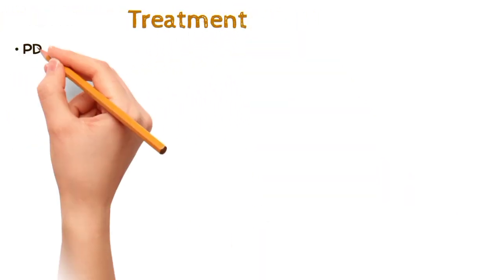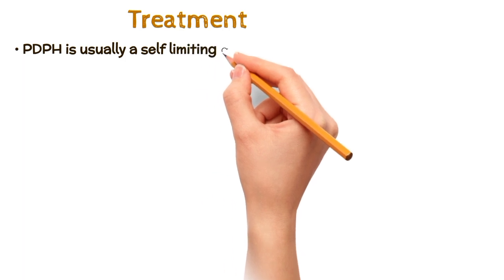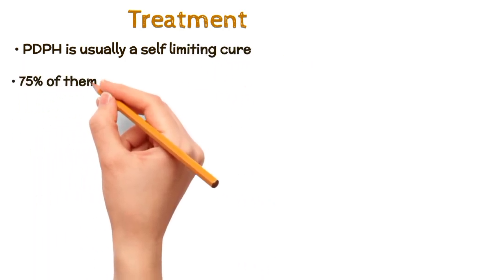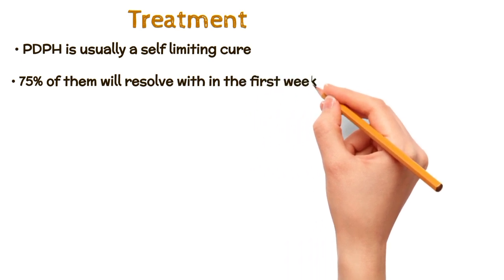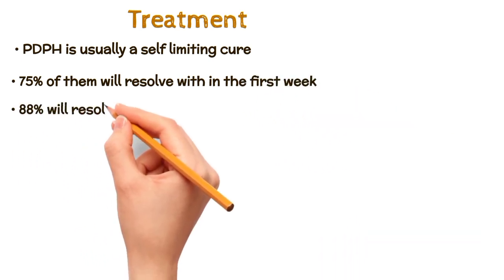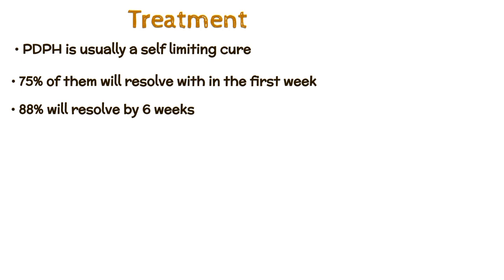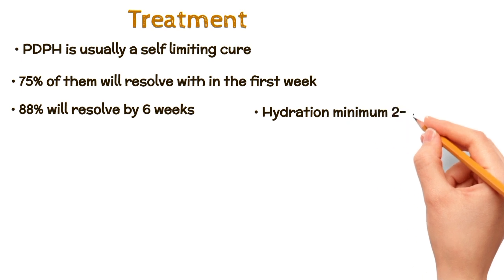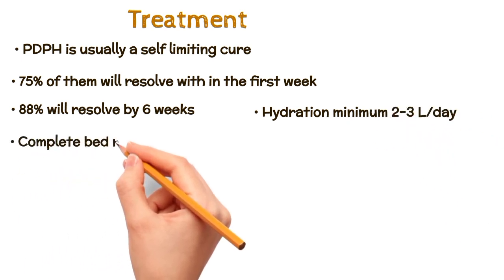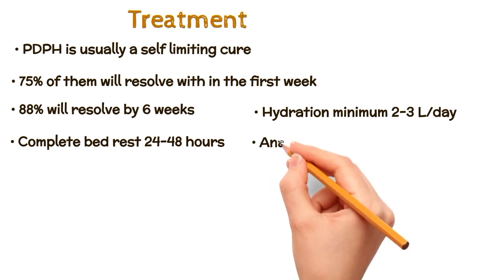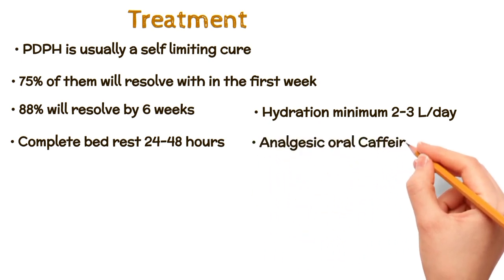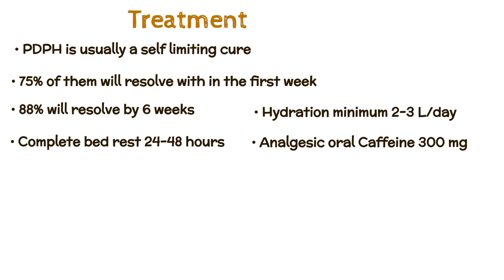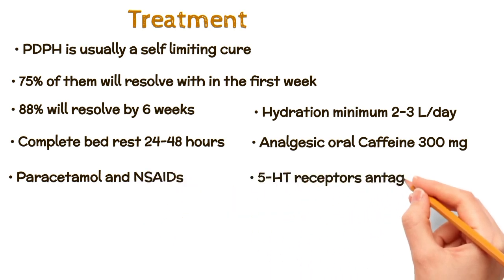Treatment: PDPH is usually a self-limiting condition if left untreated — 75% will resolve within the first week and 88% will have resolved by 6 weeks. Conservative treatment involves hydration of minimum 2 to 3 liters per day, complete bed rest for 24 to 48 hours, analgesics, oral caffeine 300 mg or intravenous 500 mg, drinking coffee or tea, paracetamol and NSAIDs, and 5-HT receptor antagonists.